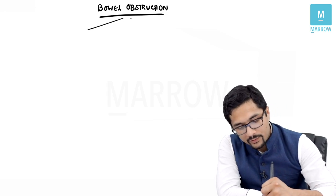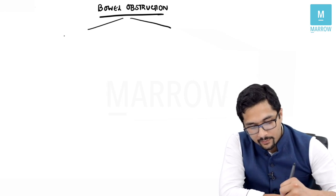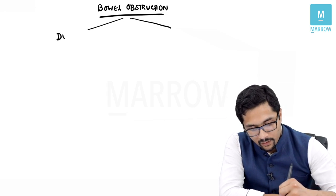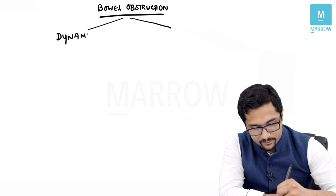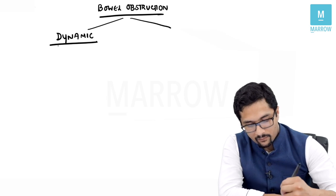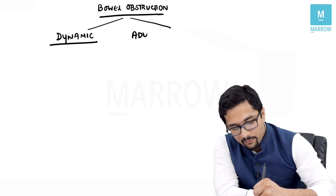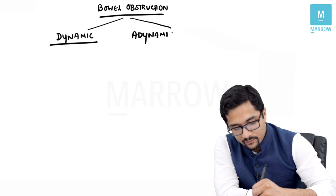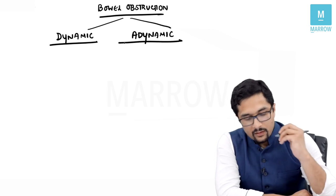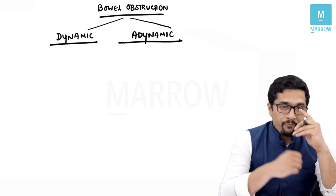The two broad types of bowel obstruction can either be dynamic bowel obstruction or adynamic bowel obstruction.